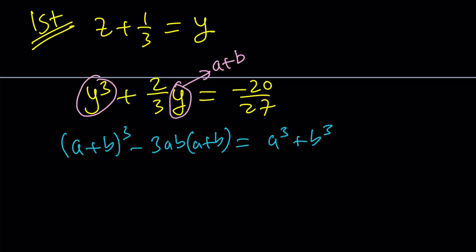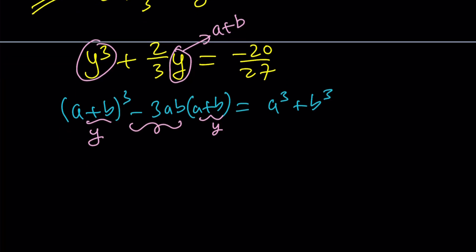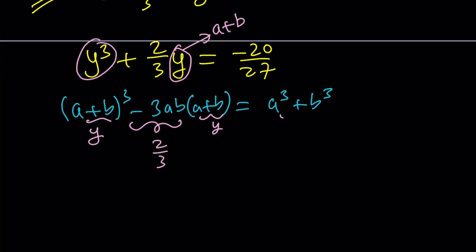So, which means this number right here is equal to the coefficient of y because this is y and this is y and that happens to be two thirds. So this is two thirds and this is negative 20 over 27. Guess what that's going to give you.